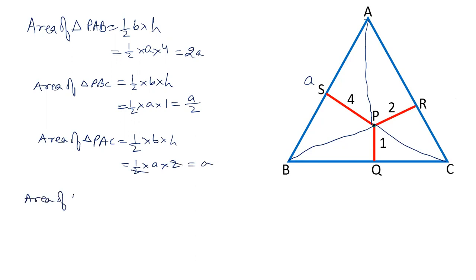So, area of triangle ABC will be equal to area of triangle PAB plus area of triangle PBC plus area of triangle PAC. Area of triangle PAB is 2A, area of triangle PBC is A by 2, and area of triangle PAC is A. So, that gives us 2A plus A by 2 plus A. That is 7A by 2.